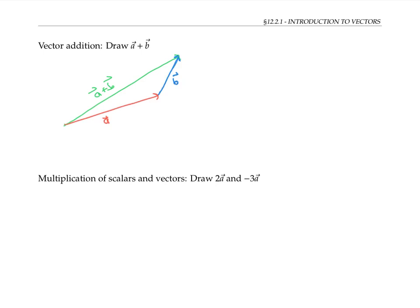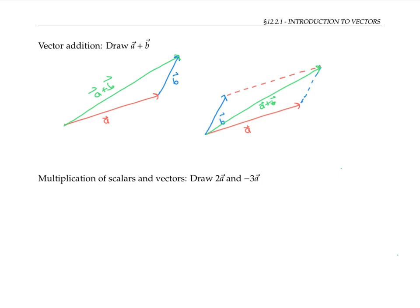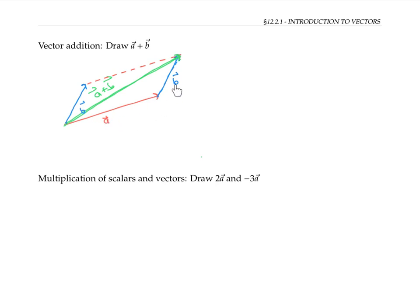There are other equivalent ways to find a plus b. For example, we can move vectors a and b so they share the same initial point, then draw the parallelogram with sides given by a and b. The diagonal of this parallelogram is the vector a plus b. This is also a good way to see that a plus b is the same as b plus a.